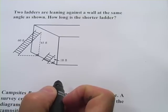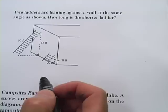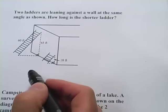Here we have some problems that involve similar triangles, and what we'll do is set up proportions to solve for some missing sides.